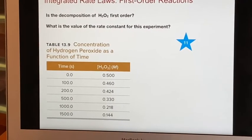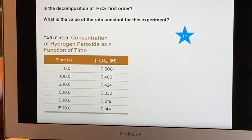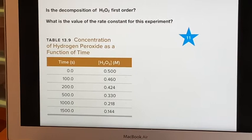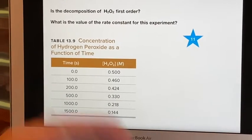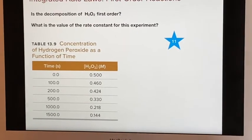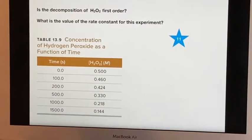Is the decomposition of hydrogen peroxide first order? And if so, what's the value of the rate constant for the experiment? We have one experiment over time. What shall we do with it? We're going to have to add a new column.